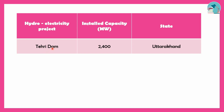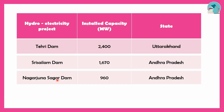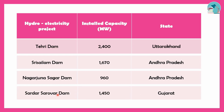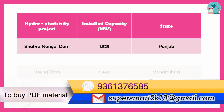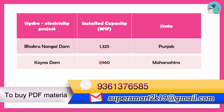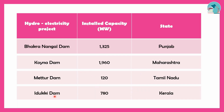Major dams in India include: Tehri Dam at 400 MW; Srisailam Dam at 1678 MW in Andhra Pradesh; Nagarjuna Sagar Dam at 960 MW in Andhra Pradesh; Sardar Sarovar Dam at 1458 MW; Bhakra Nangal Dam at 1325 MW in Punjab; Koyna Dam at 1060 MW in Maharashtra; Mettur Dam at 120 MW in Tamil Nadu; and Idukki Dam at 780 MW in Kerala.